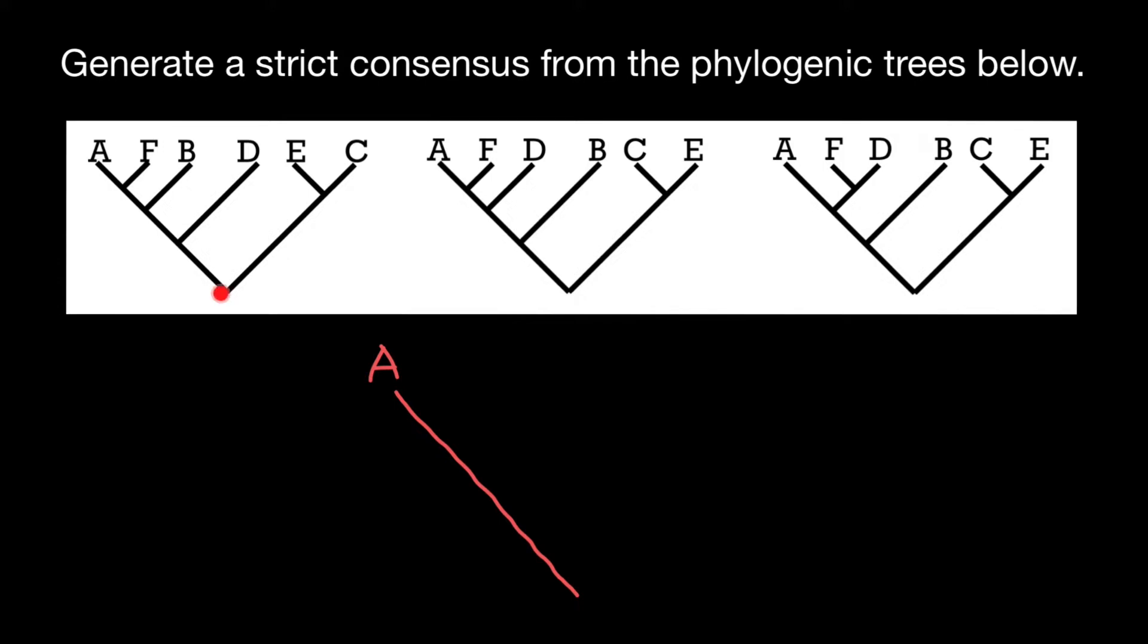And here, this branch, again, branching to E and C, branching to C and E and branching to C and E. So our branch is going to look as follows. We are going to have taxon E here, just like we have it here, here and here.